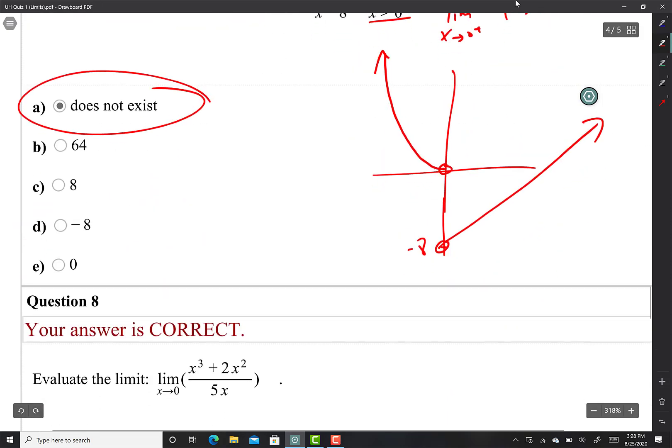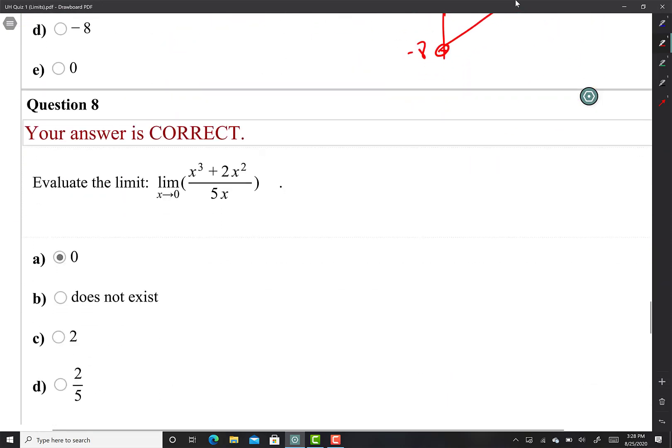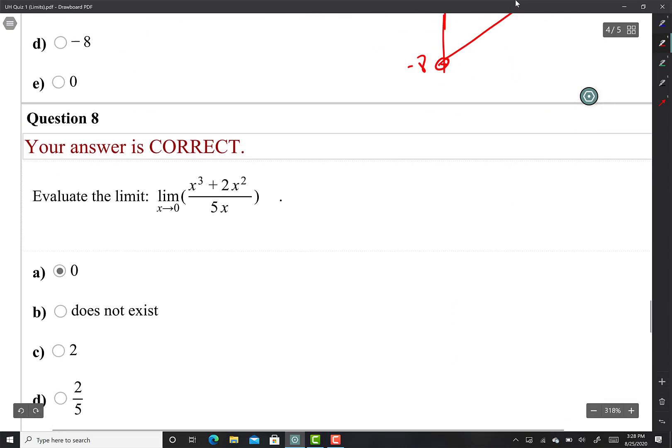This one here, it looks like I can factor out an x squared. Limit as x approaches zero, factor out the x squared and I have x plus 2 over 5x. It looks like one of the x's cancel out, so now I can do direct substitution. I have zero times 2 which is just zero.